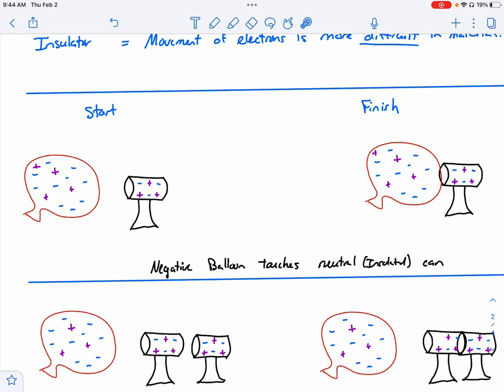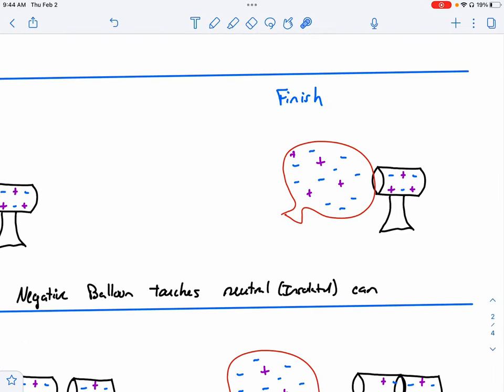So that means that the charges will not travel to the ground unless there's a pathway for them to do so. So they'll stay on the can as long as there is no other contact. If we bring a balloon that has a negative charge, and we touch that neutral insulated can, if we touch it, remember, charges want to balance each other out.